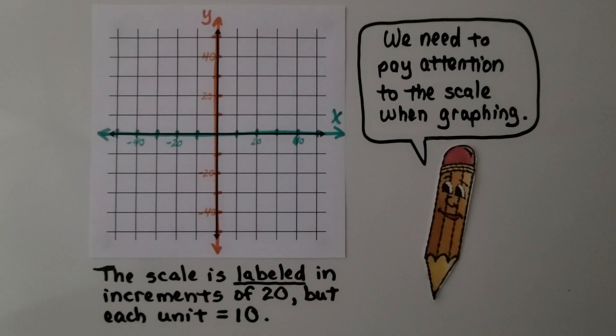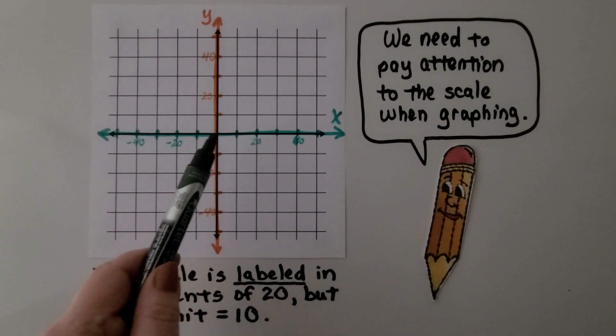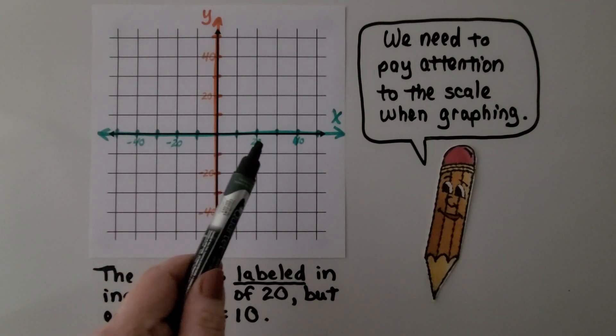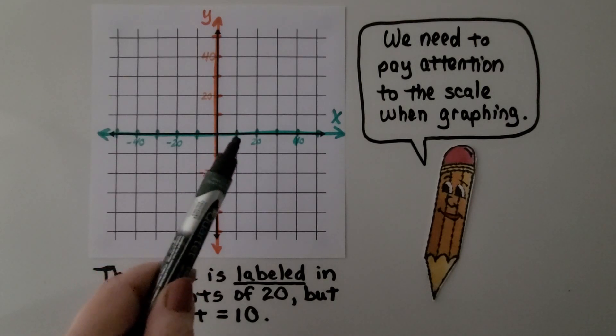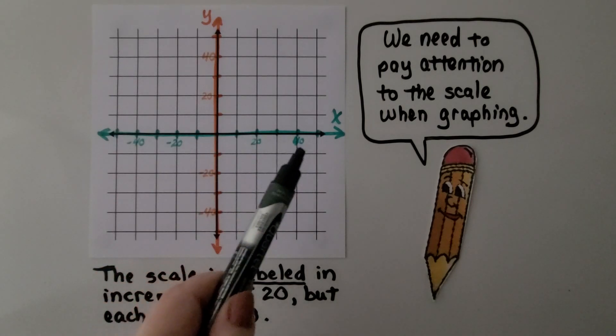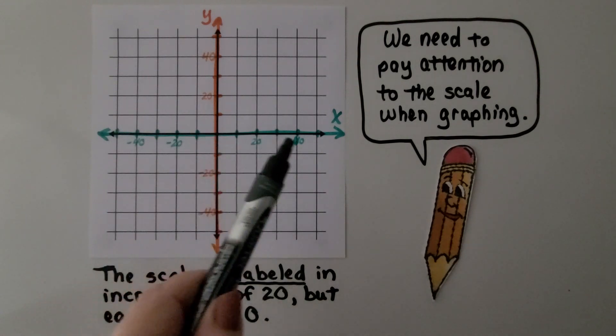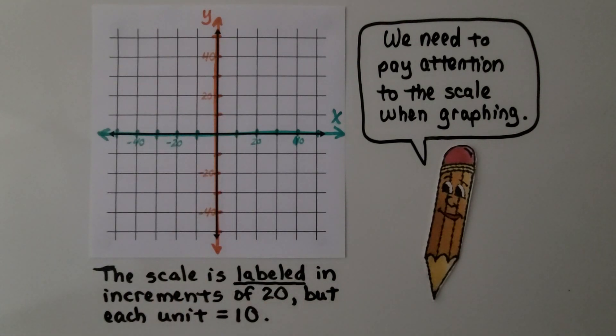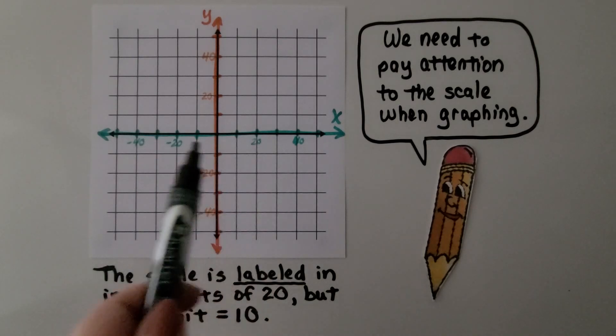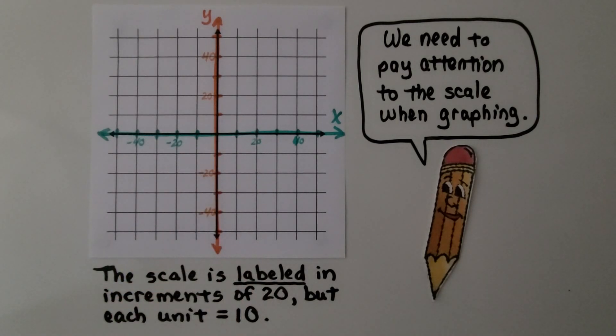This scale is labeled in increments of 20, but each unit is equal to 10. Here's zero, the origin, and we see it's labeled 20. And we know that this mark right here must be 10. It's going 0, 10, 20, 30, 40, 50. So even though it's labeled in increments of 20, each unit is equal to 10. We need to pay attention when we're graphing. We need to watch these labels to make sure we're graphing our points in the correct location.